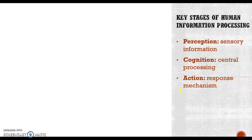If you feel comfortable with the definition, let's move to the next point: what are the three stages of human information processing? There are three key parts of human information processing. They are input, output, and decision-making process. The three stages related to these key parts are perception, cognition, and action.